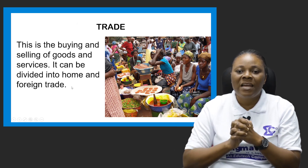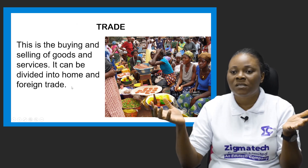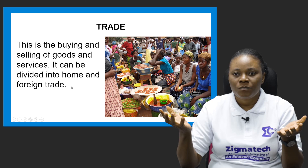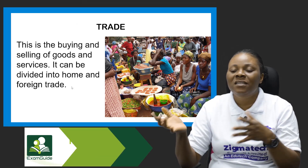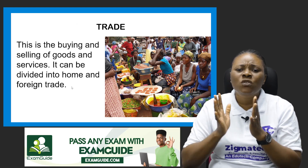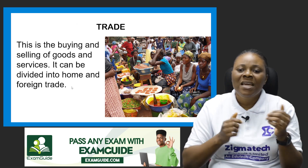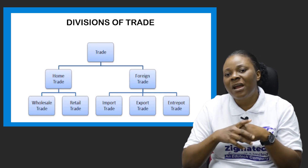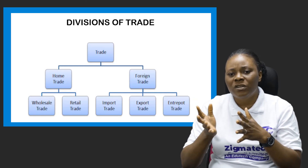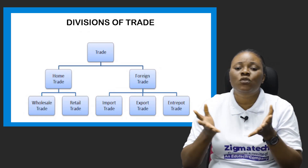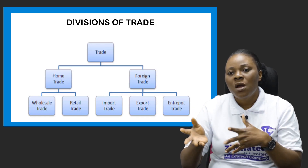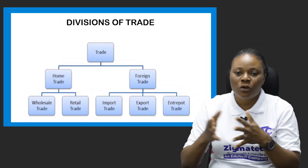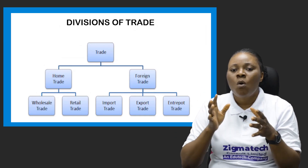Trade can simply be defined as the buying and selling of goods and services. The two major activities in trade are buying and selling, which we can also refer to as exchange. Trade involves the exchange of goods and services, basically for money. Trade has two divisions: home trade and foreign trade. Home trade can be divided into wholesale trade and retail trade, while foreign trade can be divided into import trade, export trade, and entrepot trade.